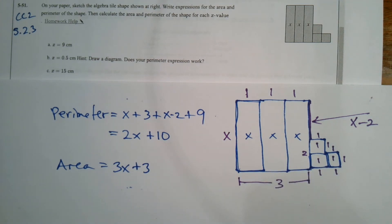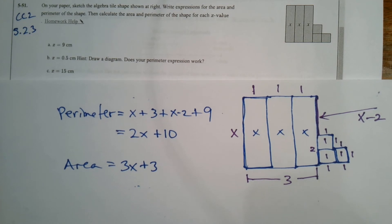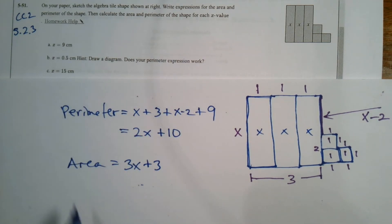So there's my area and perimeter. Okay, now for part A, B, and C, they want us to utilize these numbers and plug them in.